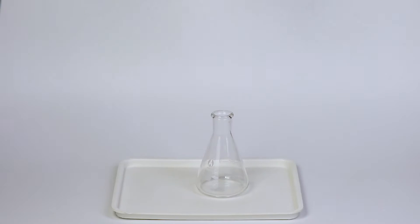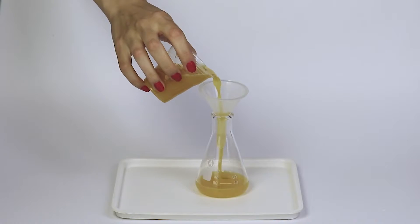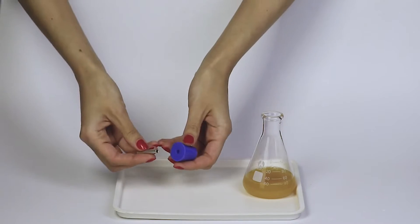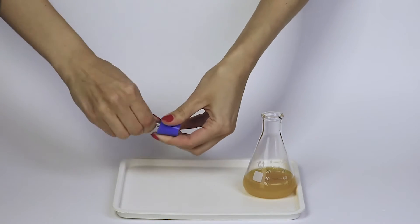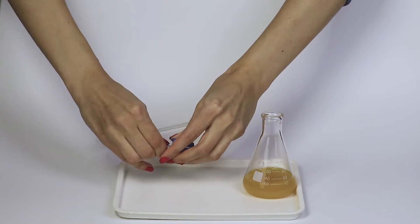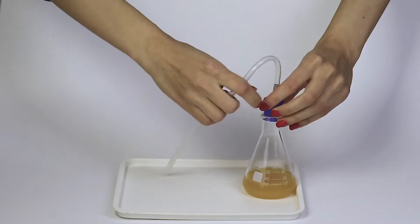Using the funnel, pour 40 milliliters of juice into the flask. Now insert approximately half a centimeter of the metallic cylinder into the rubber stopper, and put the silicon tube onto the other end of the cylinder. Carefully close the flask with the stopper.